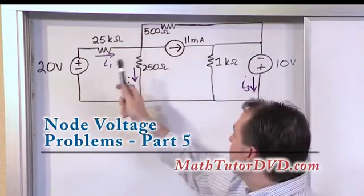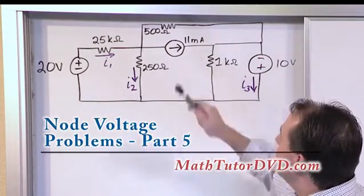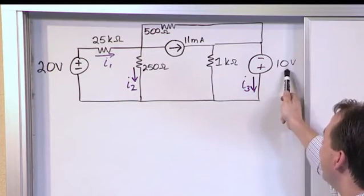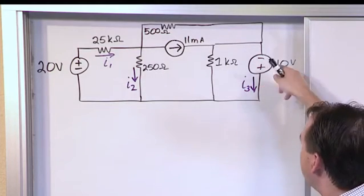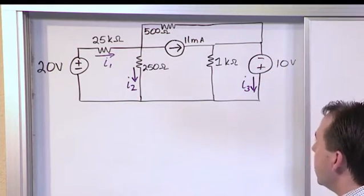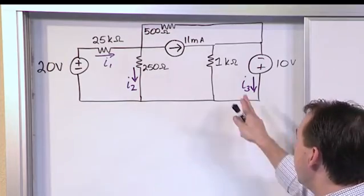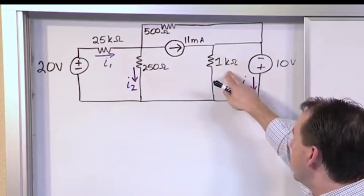So we have a 20 volt source, we have an 11 milliamp current source, we have a 10 volt source which is actually kind of backwards, so we have minus and plus. This problem also has larger resistors, so this is 1 kilo ohm, 1,000 ohms,